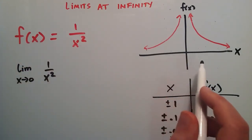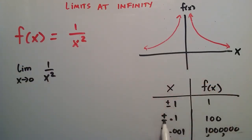Moving in closer to ±0.1 gives us a corresponding f(x) value of 100. Even closer at ±0.001, we're already getting a value of 1,000,000.